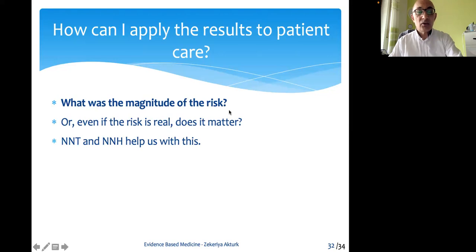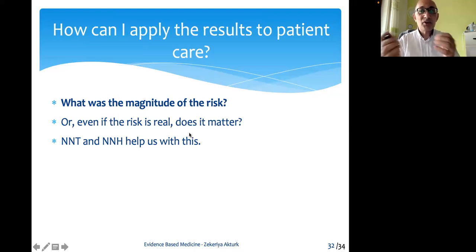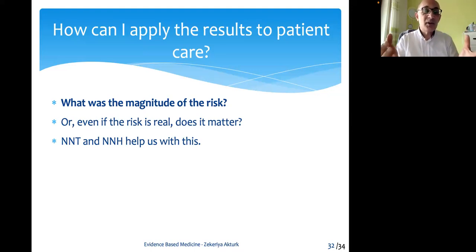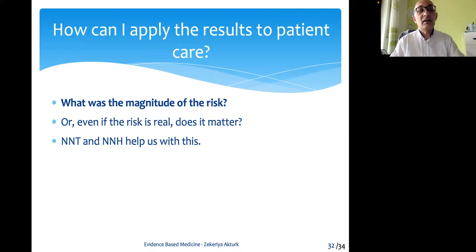What was the magnitude of the risk? Even if the risk is real, does it clinically matter? For example, if there is a blood pressure difference of only one millimetre of mercury between the study and control groups, even if it is statistically significant and from a valid study, it might not mean much for you clinically, because that magnitude is still clinically negligible and very small.